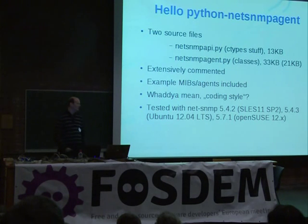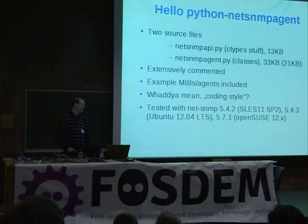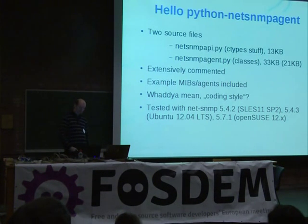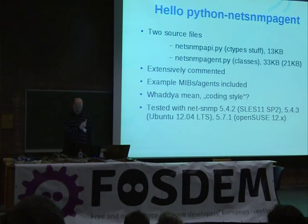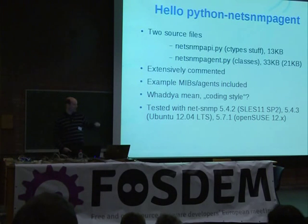Hello, Python NetSNMP agent. It's pretty simple, actually — just two source files. One has all the ctypes stuff, meaning prototypes as we would say in C, which wraps the API calls — just 13 kilobytes. And on top of it, netsnmp_agent.py, which is the file containing the classes. It's also not that large, but it's extensively commented, which explains why the real code size is one-third less.